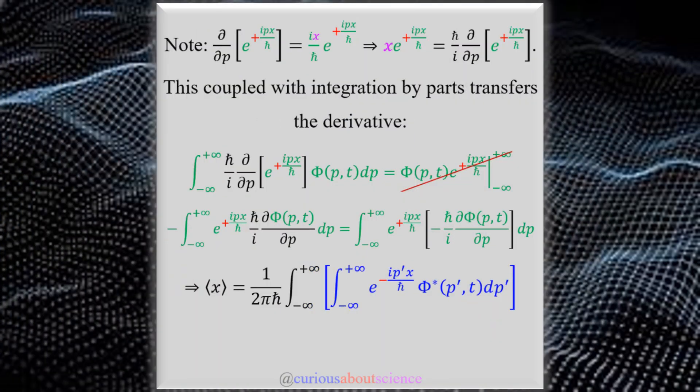All right, so we need to notice that with the hint given by the author in this particular question, we can observe that the derivative with respect to p up here, here d by dp of the green exponential leads to a factor of x coming out front, and of course i h-bar tag along everywhere.